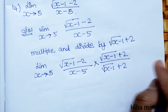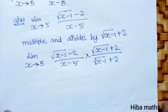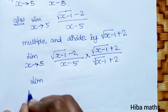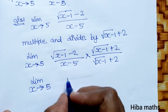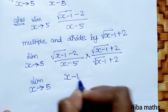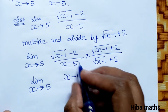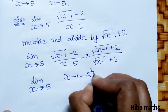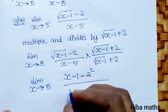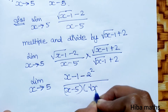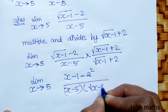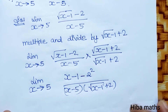In the numerator we have the form (a minus b)(a plus b), which equals a squared minus b squared. So the numerator becomes (x minus 1) minus 4, which equals x minus 5, divided by (x minus 5) into [root (x minus 1) plus 2].